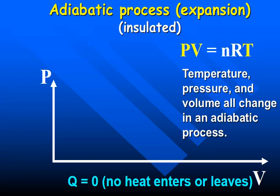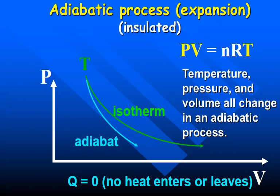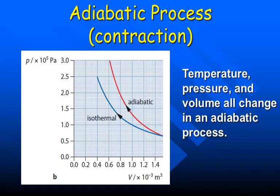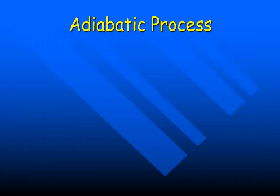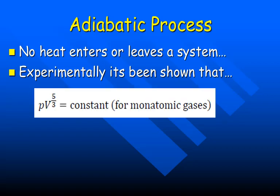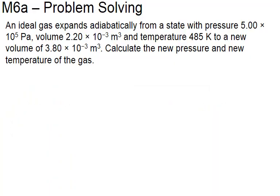An adiabatic process is where all three — pressure, volume, and temperature — change, and no heat enters or leaves. It's been shown that pressure times volume to the 5/3 power is constant for monatomic gases. So the pressure before equals pressure after in terms of that relationship, which we can use to evaluate an adiabatic process.